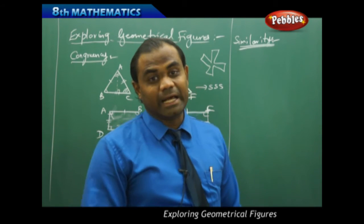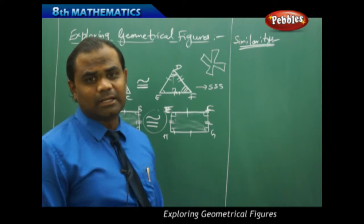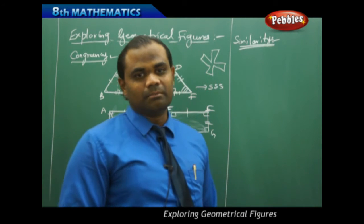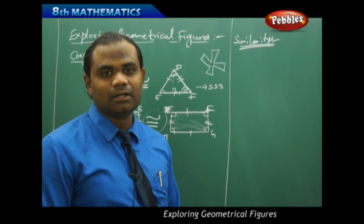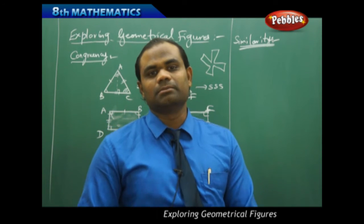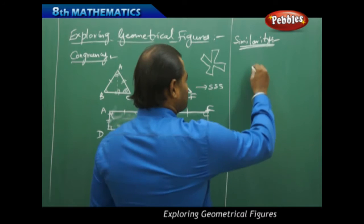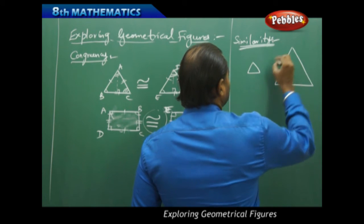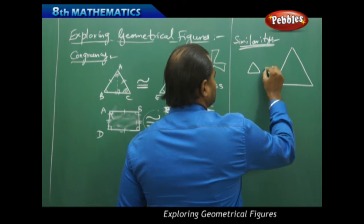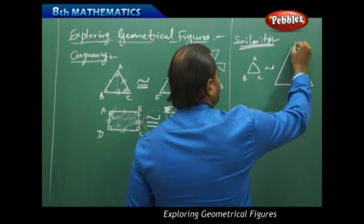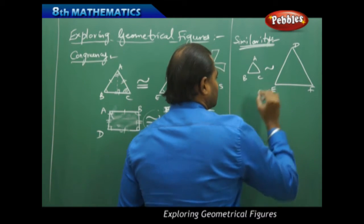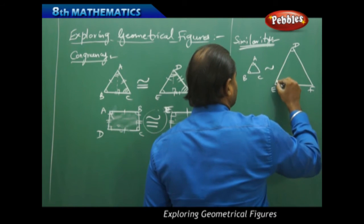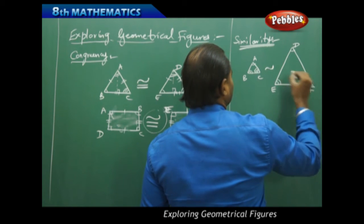Now, what do we mean by similarity? What is the difference between congruency and similarity? Two triangles being congruent implies they are equal in all respects, but two triangles being similar means they are not equal in all respects but only in some limited properties. For example, a smaller triangle and a bigger triangle are said to be similar — triangle ABC is said to be similar to triangle DEF if their corresponding angles are equal but the sides may not be equal.